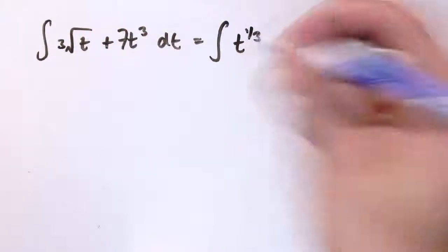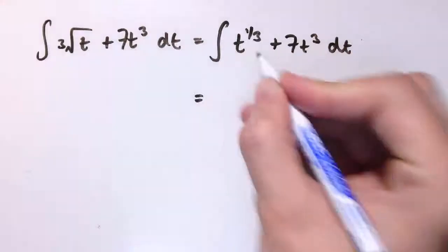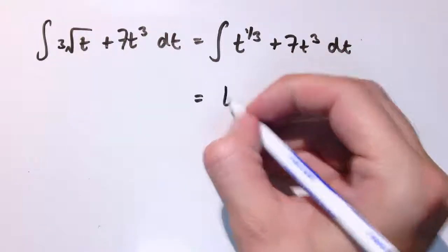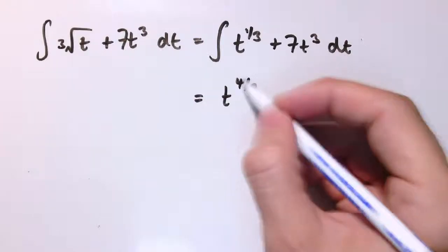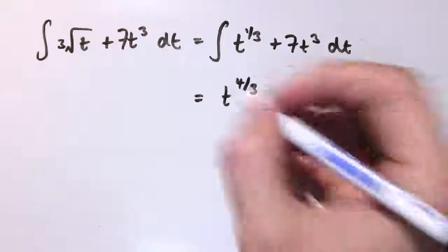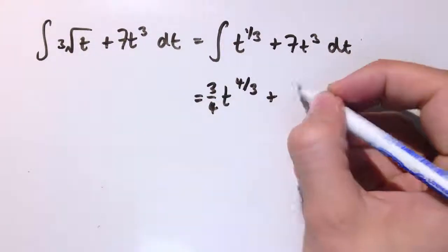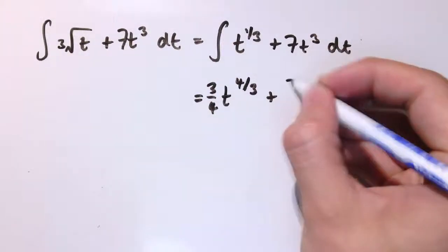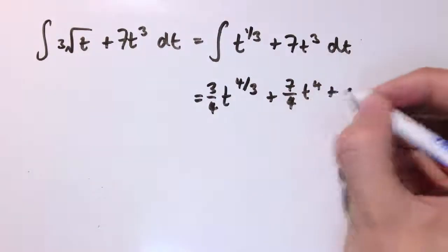We'll rewrite these. This is the cube root of t, so this is t to the 1 third, and 7t cubed just as it is. So I'm going to increase the power of t by 1 to get t to the 4 thirds, divide by the new power which means multiplying by the reciprocal because it's a fraction, so 3 quarters t to the 4 thirds. Plus 7, increase the power by 1, divide by the new power, plus c, and then we're done.